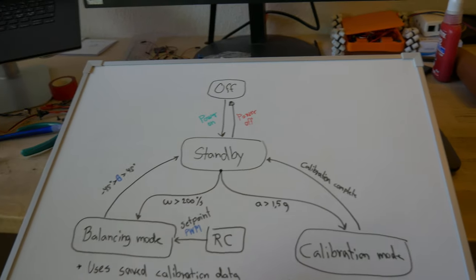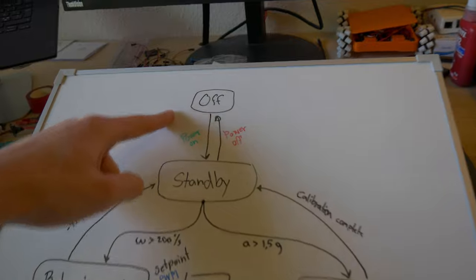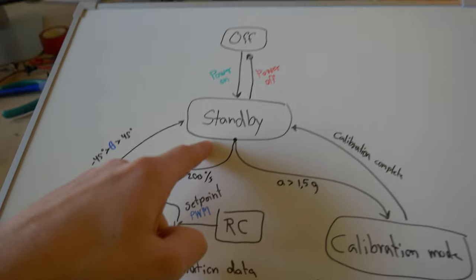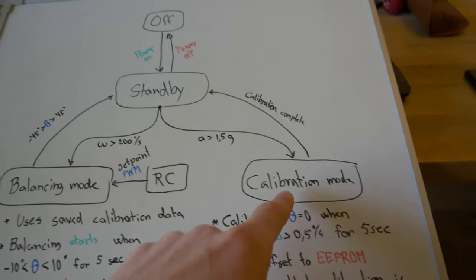This is the state diagram that shows how the robot is going to behave. First, when it's off, you can power it on and it will go into standby mode. Here it can do two things: go into balancing mode and calibration mode.